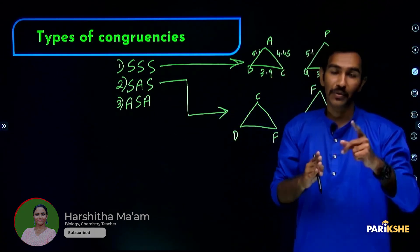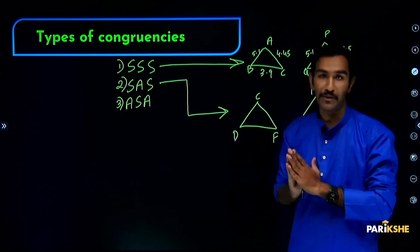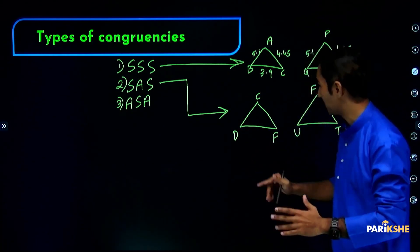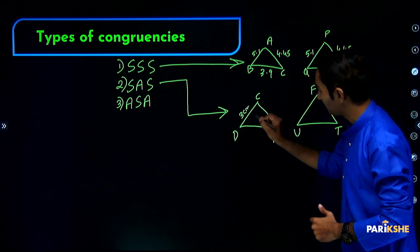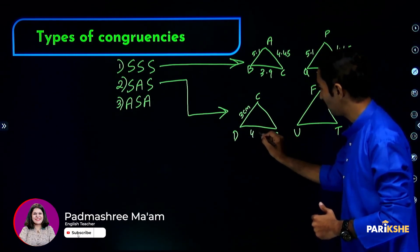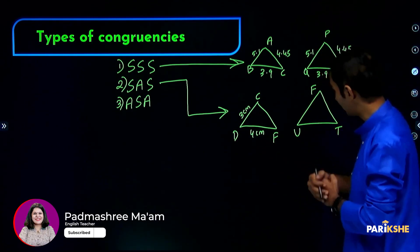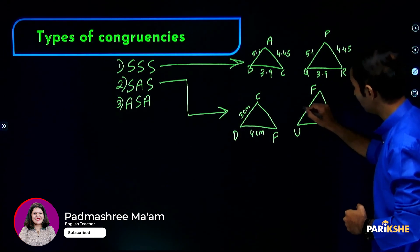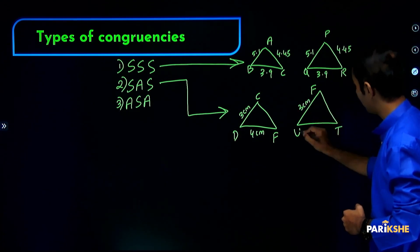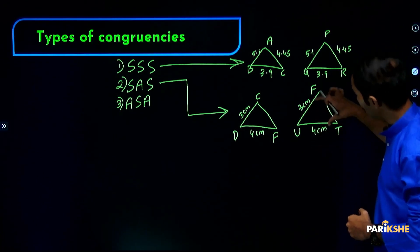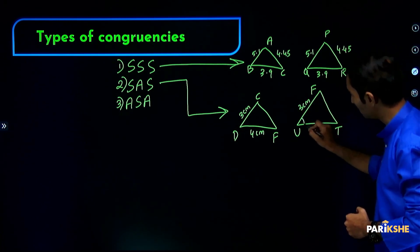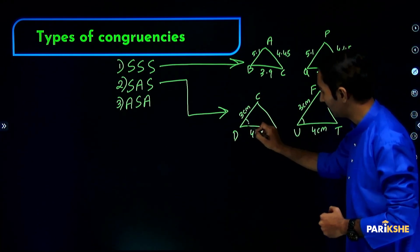SAS means side-angle-side. This means included angle. This angle is formed by two sides meeting at the middle. For example, this point forms the angle.